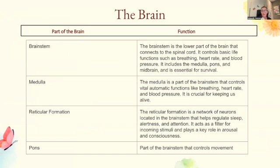The brainstem is in the lower part of the brain, connects to the spinal cord, and controls basic life functions such as breathing, heart rate, and blood pressure. It includes the medulla, pons, and midbrain, and is essential for survival. The medulla is a part of the brainstem that controls vital automatic functions like breathing, heart rate, and blood pressure — it is crucial in keeping us alive.